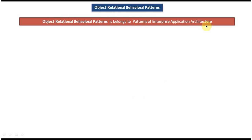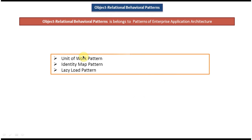There are three design patterns which come under the Object Relational Behavioral Patterns. The first one is the Unit of Work pattern, the second one is the Identity Map pattern, and the third and final one is the Lazy Load pattern.